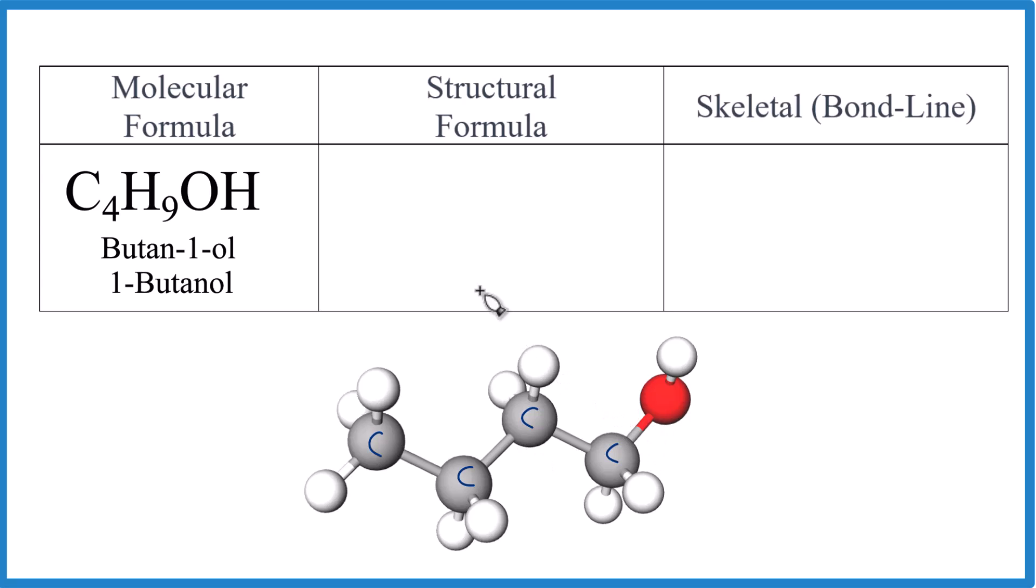So let's write four carbons. We'll put our alcohol, the OH. That's what this -ol suffix means - we have the OH here on the end. Then we'll add the hydrogens. So that's the structural formula for butanol.